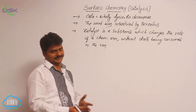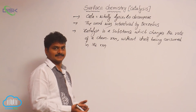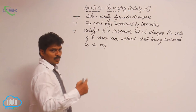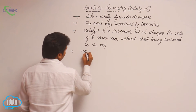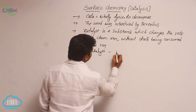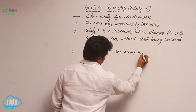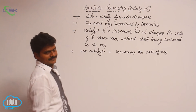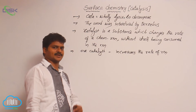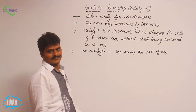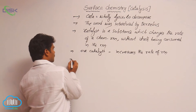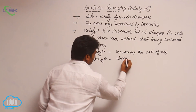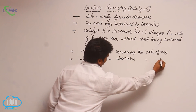Catalysis is of two types: positive catalysis and negative catalysis. A positive catalyst increases the rate of reaction when it is added, and this process is called positive catalysis. A negative catalyst decreases the rate of a chemical reaction.